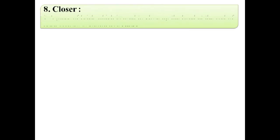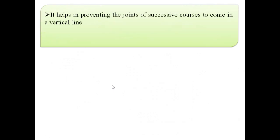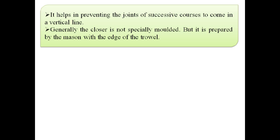The next term is closure. A piece of brick which is used to close up the bond at the end of brick courses is known as a closure. In this image we can see these are the closures used to close up the bond at the end of brick courses. It helps in preventing the joints of successive courses from coming in a vertical line. Generally, the closure is not specially moulded but is prepared by the mason with the edge of the trowel.